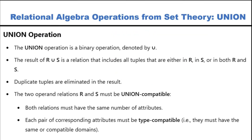The first is union. Union operation is a binary operation. What is the meaning of binary? Binary operates on two relations — relation one and relation two — unlike sigma and pi which operate only on one relation. So this union operation is a binary operation, denoted by ∪, and it includes all the tuples that are either in R or in S, or in both R and S.